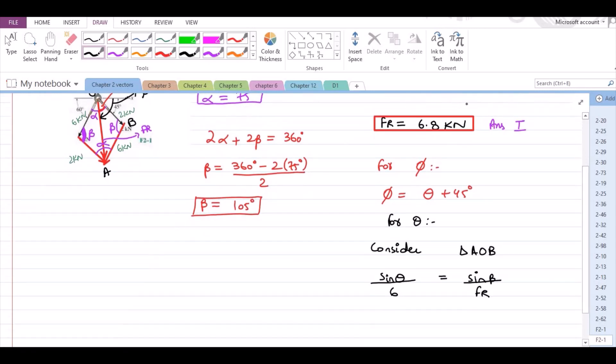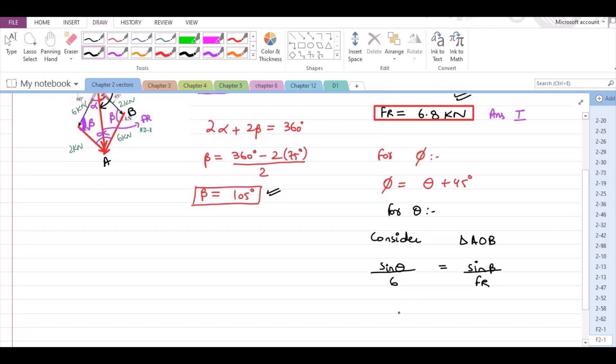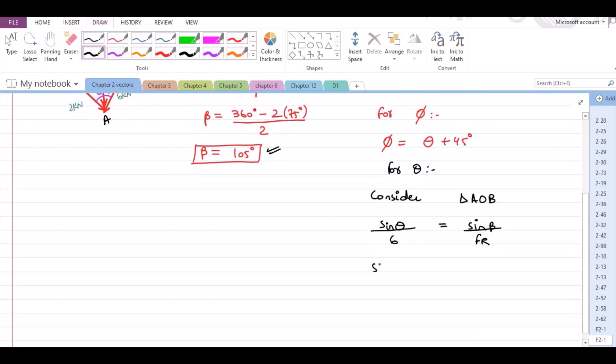Now, FR is 6.8 kN and beta is 105 degrees. So, from here, sine theta is equal to 6 into sine 105 divided by 6.8.